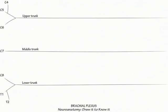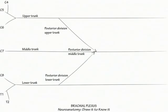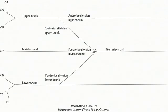The trunks divide into anterior and posterior divisions as follows. Show the posterior divisions all join to form the posterior cord. Then label the anterior division of the upper trunk on top and show the anterior division of the middle trunk join it to form the lateral cord.